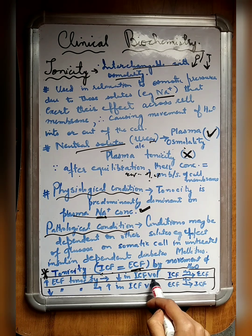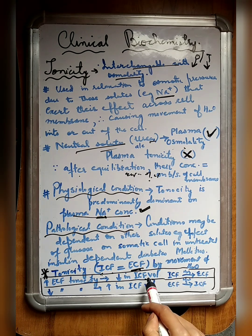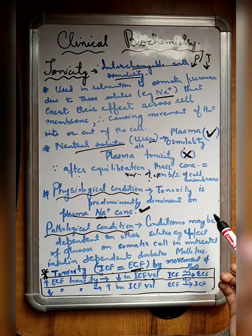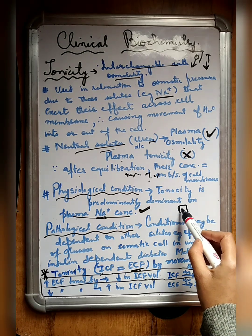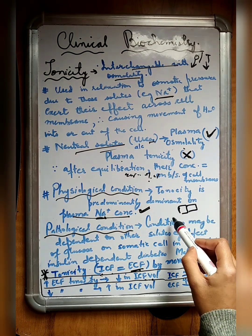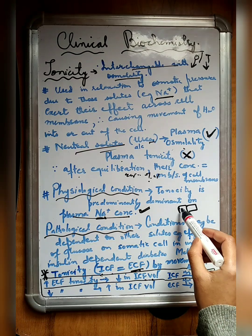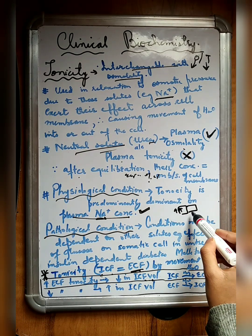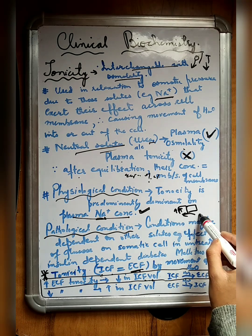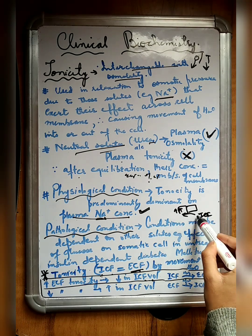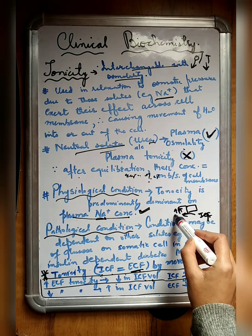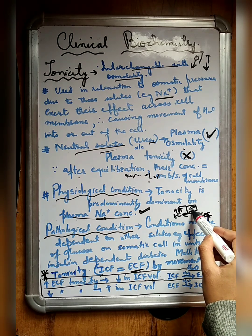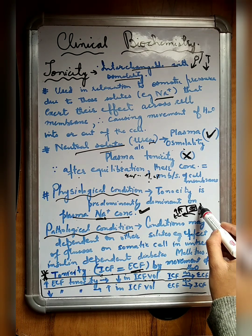Why does a decrease in ICF volume occur? The reason is that if this is the ECF compartment and this is the ICF, when tonicity is increasing here, water will start moving from the ICF to the ECF. When water moves from ICF to ECF, the volume of water inside this compartment will become less.